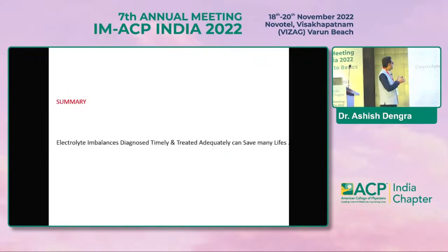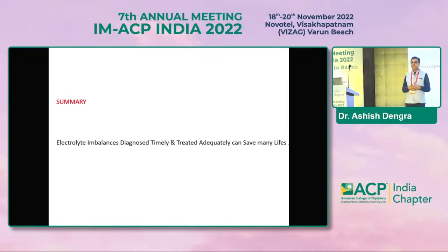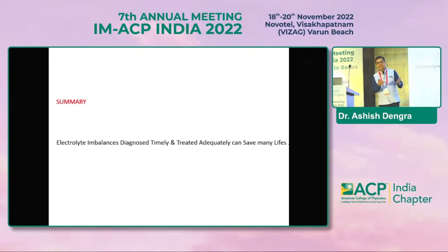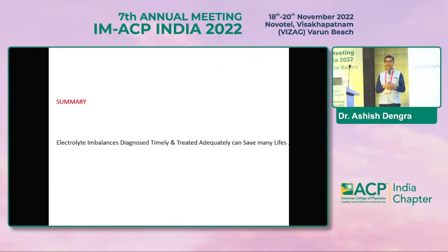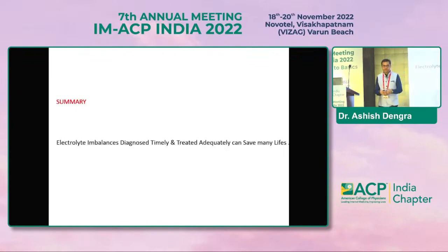To summarize: electrolyte imbalance diagnosed timely and treated adequately can save many patients' lives and money, because otherwise the patient can be referred to a neurologist, admitted to the ICU, or prescribed a CT scan. By clinical examination, history, and timely diagnosis of electrolyte imbalance in your clinical practice, you can save many lives.